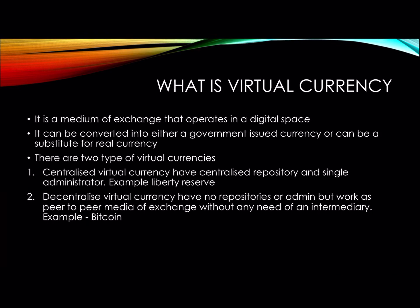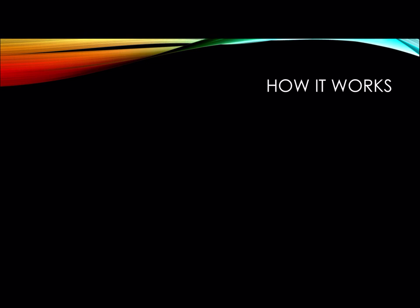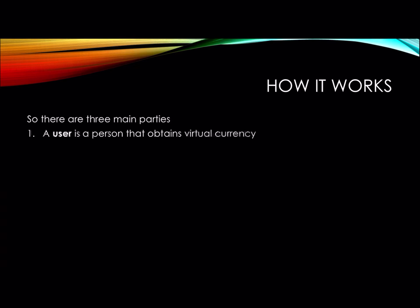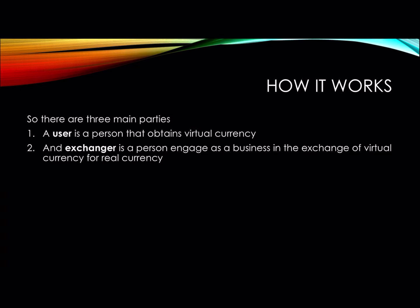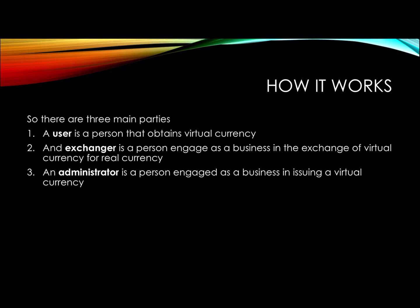Decentralized virtual currency works without any need of an intermediary — for example, Bitcoin. Now let's understand how it works. There are three main parties: a user is a person that obtains virtual currency; an exchanger is a person engaged as a business in the exchange of virtual currency for real currency; and an administrator is a person engaged in issuing a virtual currency.